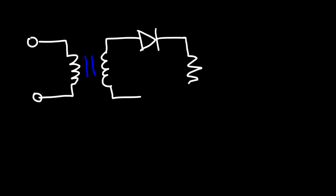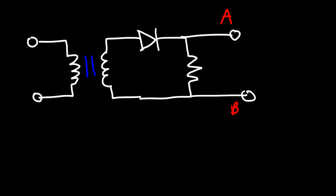In this lesson, we're going to talk about half-wave rectifiers. Let's connect the input to a transformer, and then this transformer is going to be attached to a conventional diode, which is attached to a resistor. Let's call this point A and point B, and here we have diode D1, and let's call this R.